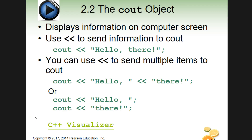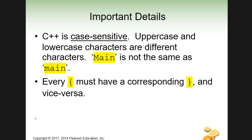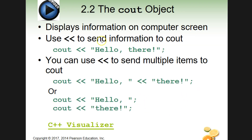Here we go with section 2.2, the cout object. Let me step back — C++ is case sensitive, that's a big deal. Something like 'Main' with a capital M is not the same as 'main' lowercase. If you try to use one in place of the other, you'll get an error. Also, every open brace must have a corresponding closing brace — pay attention to that too.